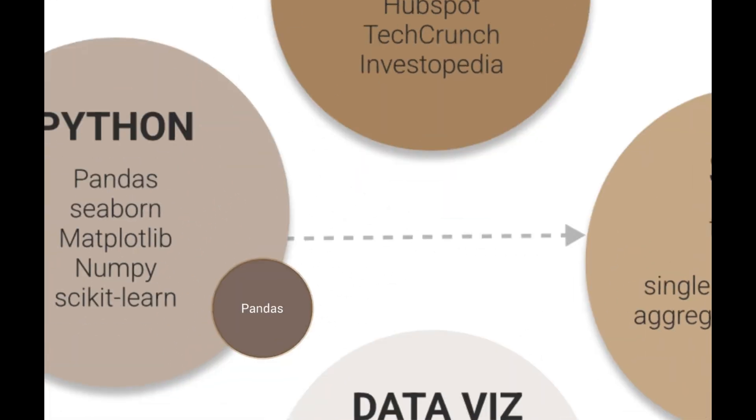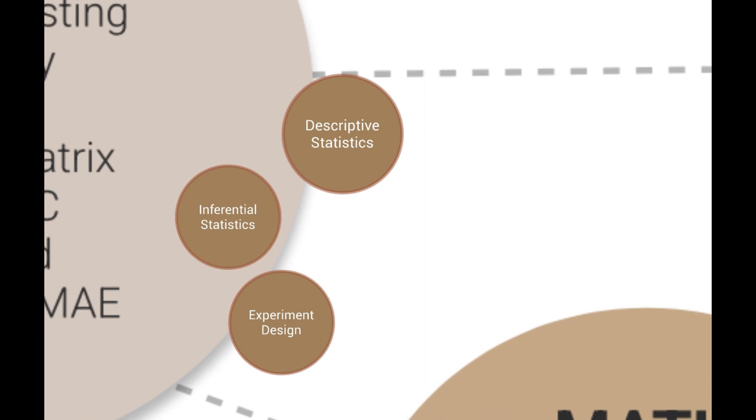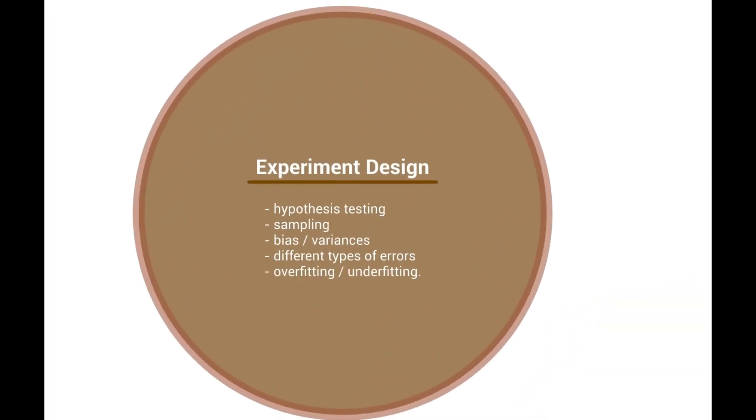After defining the problem, then it is to frame it into a data science solution. This starts with the knowledge and experiment design which falls under the domain of statistics, including topics of hypothesis testing, sampling, bias variance trade-off, different types of errors, overfitting and underfitting.